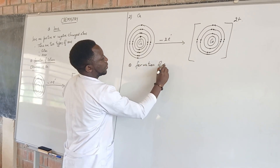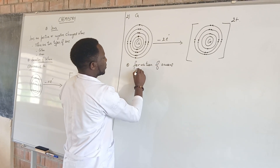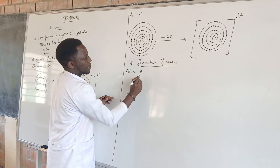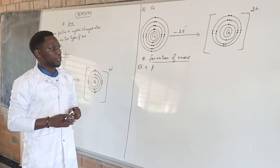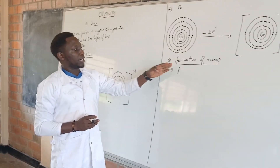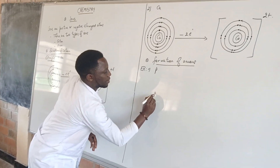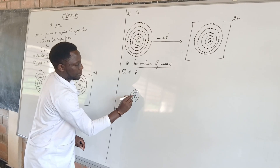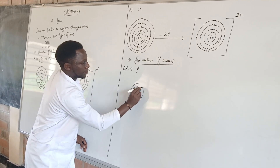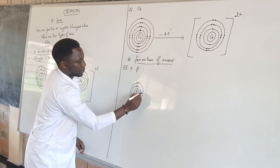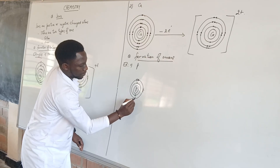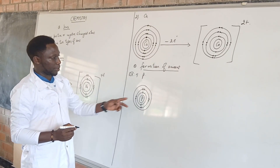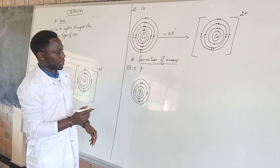Formation of anions. For example, let's start with phosphorus. Phosphorus is number 15 on the periodic table. As we did here for cations, let's also show the structure of phosphorus as the electronic configuration. The first shell contains two, the second contains eight.